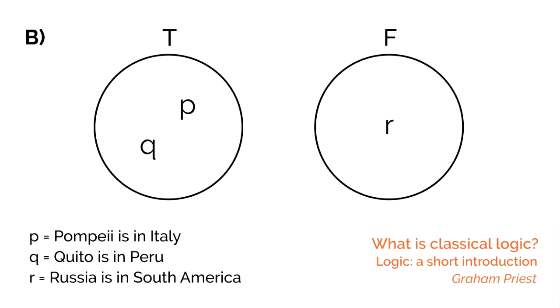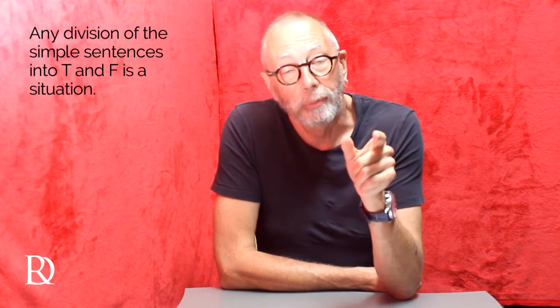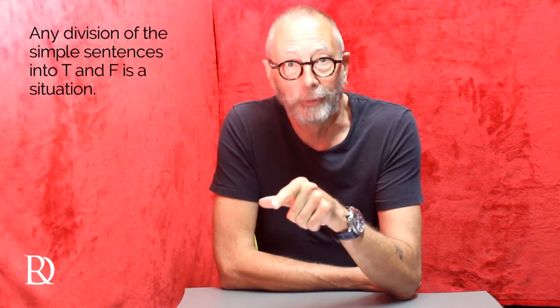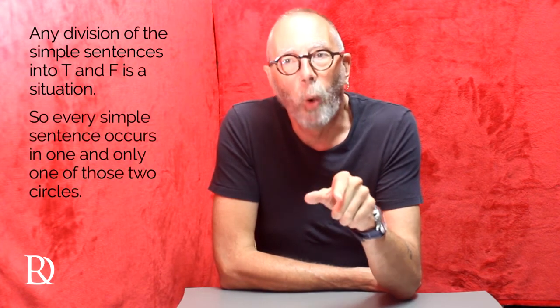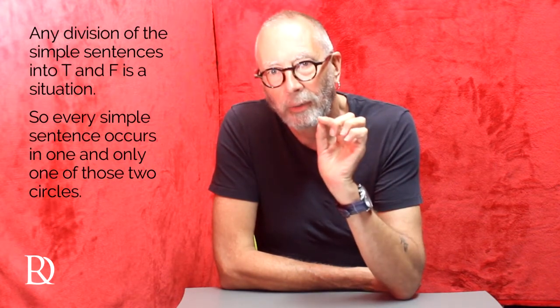Another situation is given by a different distribution, which I've labeled B. So in this situation, P and Q are true and R is false. If you think of Q being Quito is in Peru, this is not an actual situation — it's a kind of hypothetical situation where Peru actually conquered Ecuador sometime in the past. So situations don't have to be actual; they can be hypothetical. And technically speaking, any division of the simple sentences into T and F is a situation. So every simple sentence occurs in one and only one of those two circles — it's either true or it's false, not both, not neither.